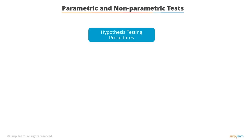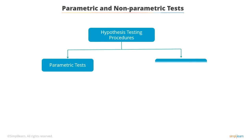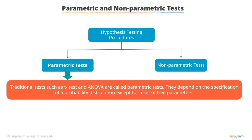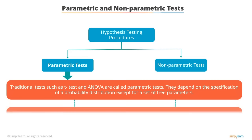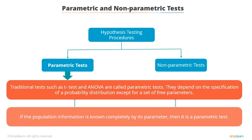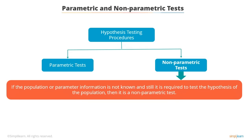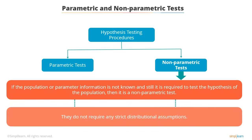Let's now learn about hypothesis testing procedures. There are two types: parametric tests and non-parametric tests. Traditional tests such as t-test and ANOVA are called parametric tests — they depend on the specification of a probability distribution except for a set of free parameters. If the population information is known completely by its parameter, it is a parametric test. If the population or parameter information is not known and you still need to test the hypothesis, it's called a non-parametric test. Non-parametric tests do not require any strict distributional assumptions.